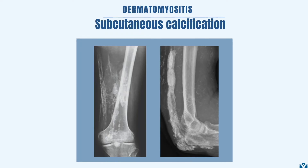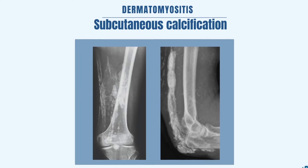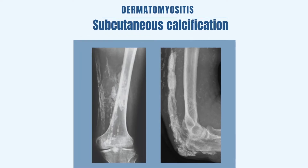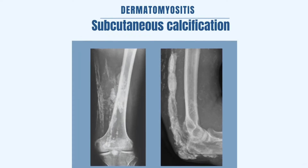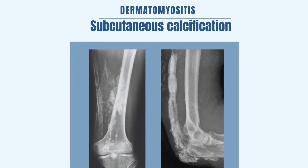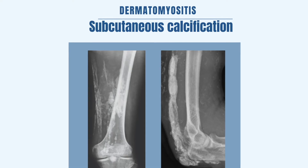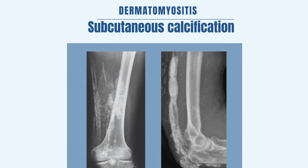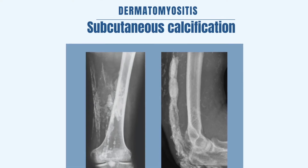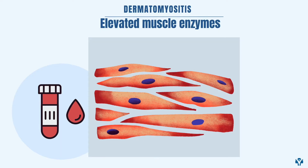Subcutaneous calcifications: These are seen over the elbows, but sometimes over the knees and in other parts of the body. These changes are more frequently seen in patients with dermatomyositis, especially in children.